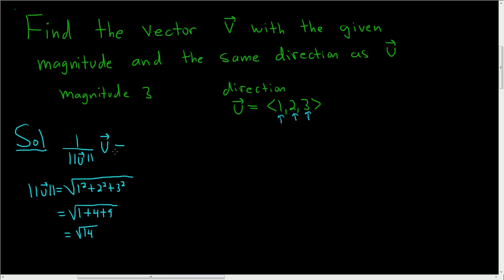So going back to our formula, this is 1 over the square root of 14. Then we have our vector u, so 1, 2, 3.